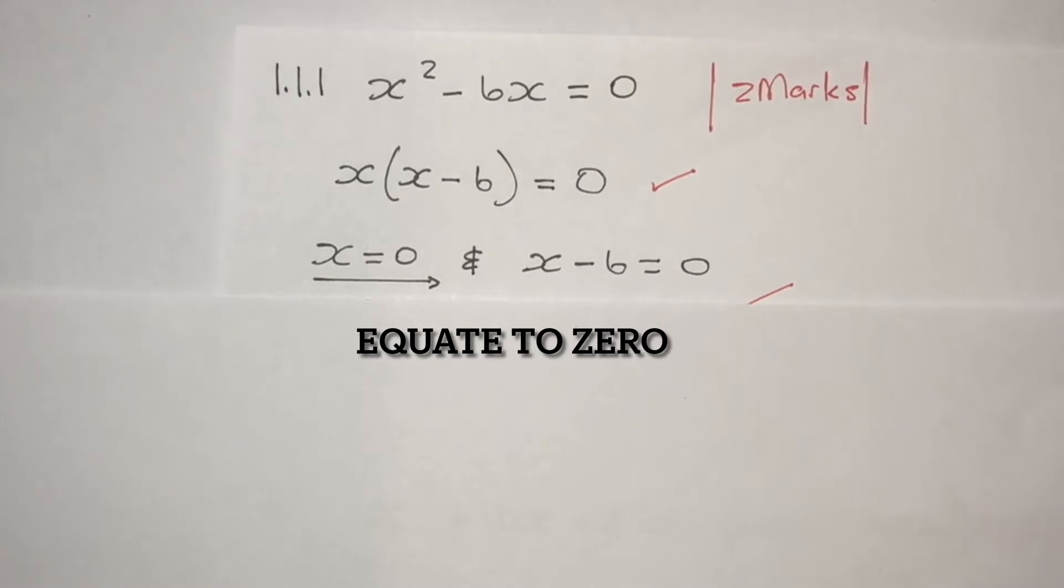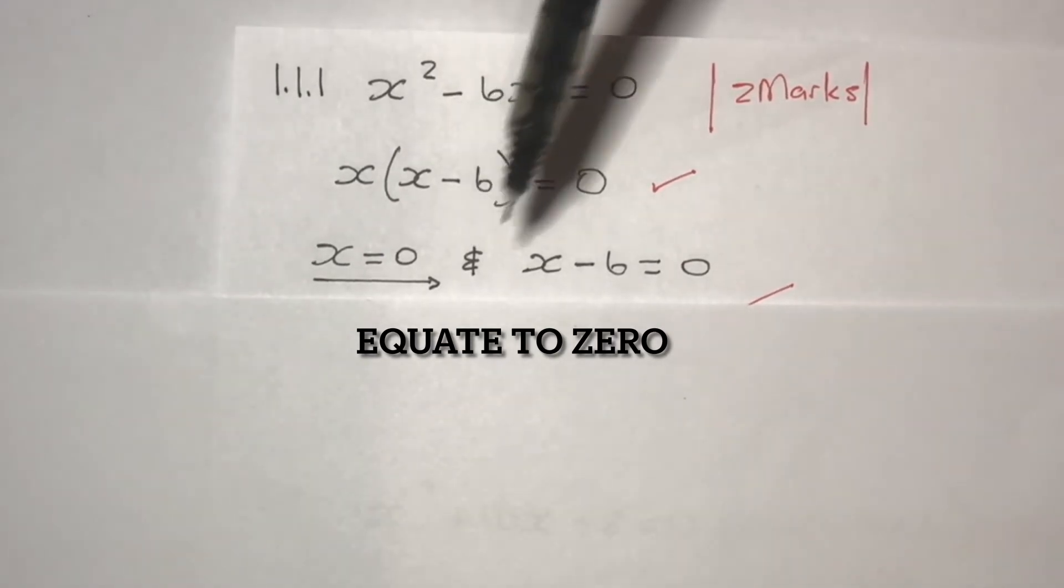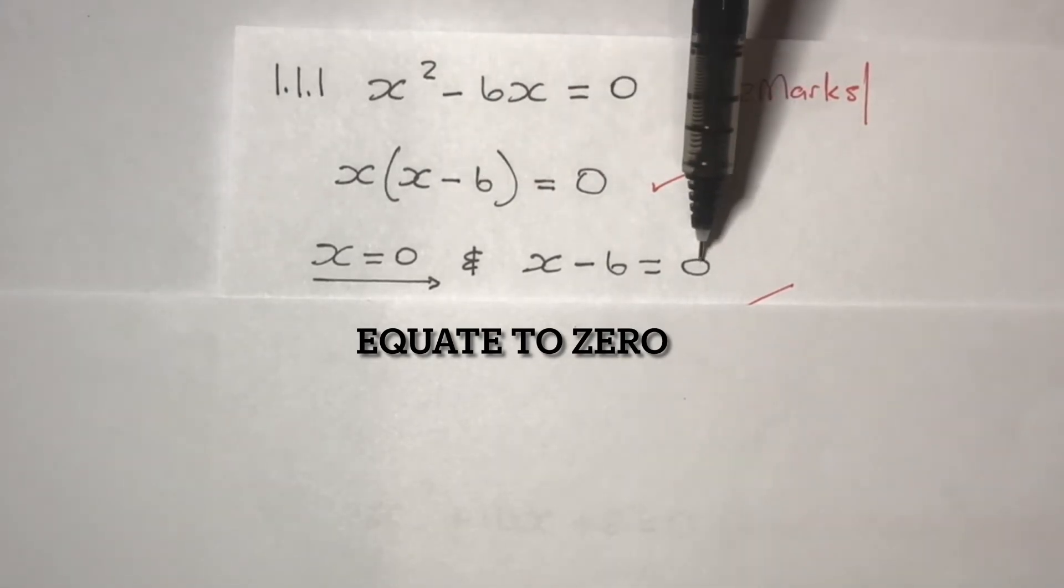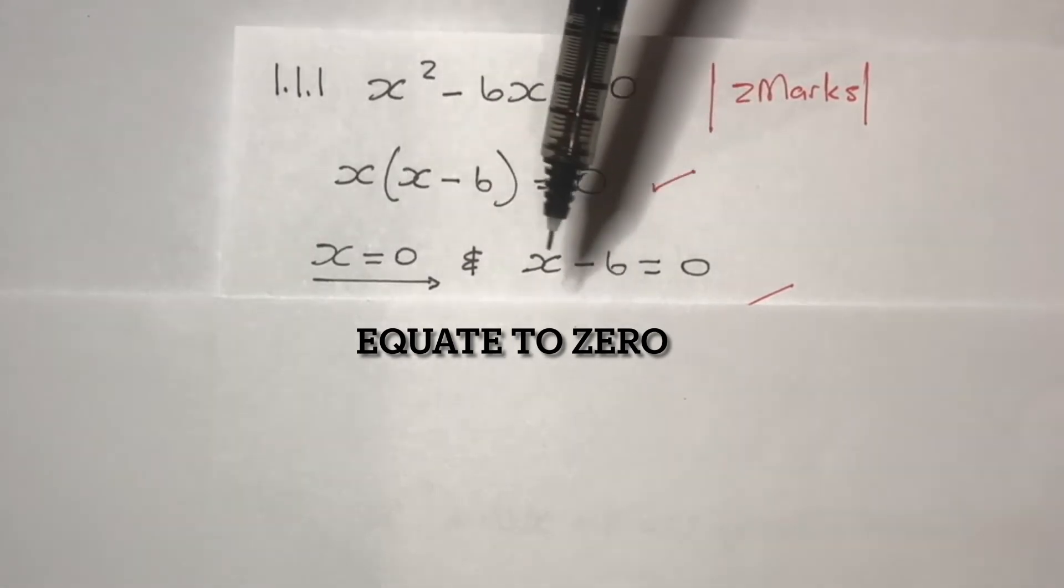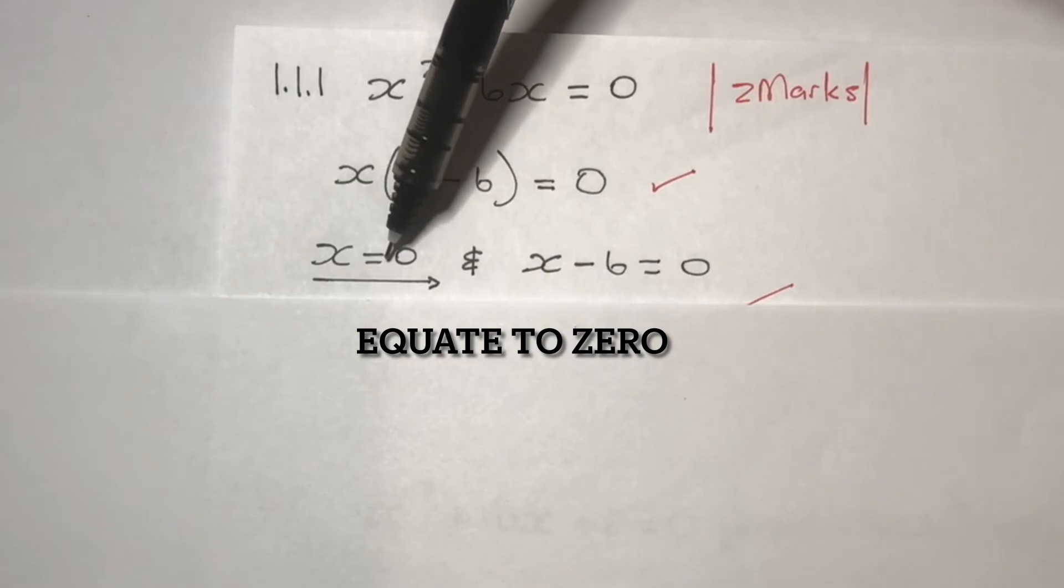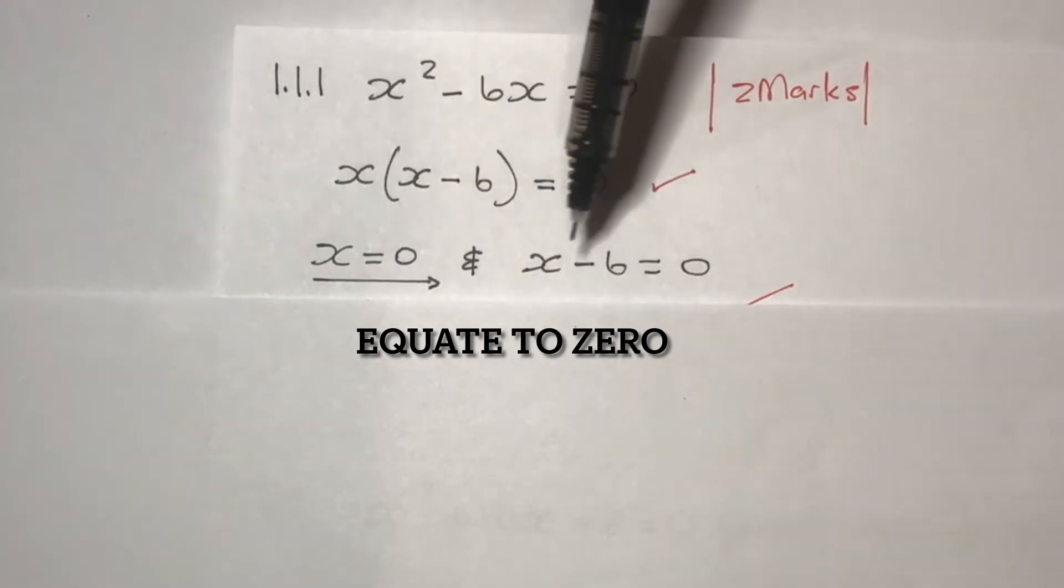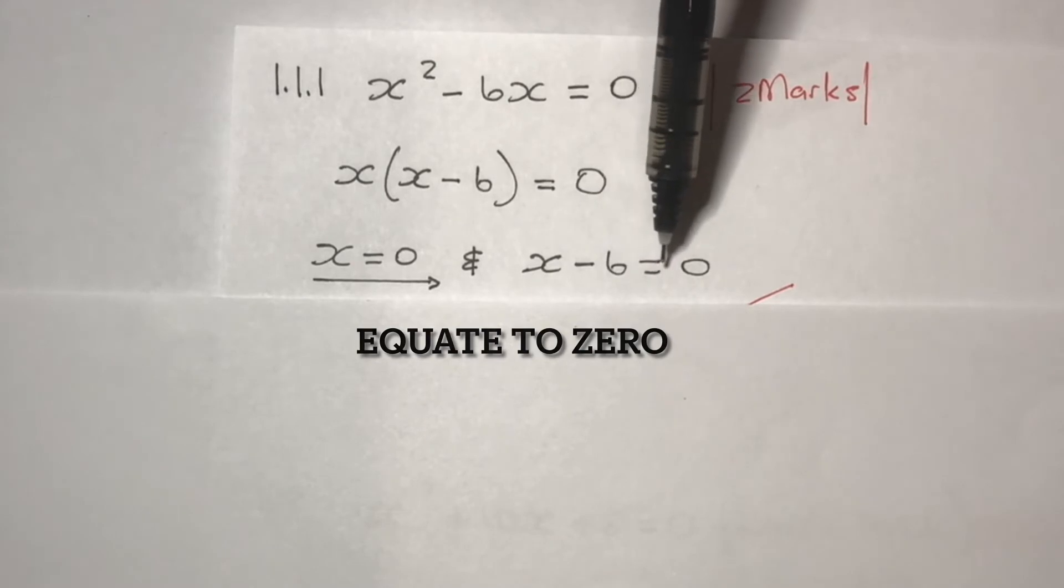Next step, you equate x to 0 and x minus 6 is equals to 0. So in this case, you've already solved the first part of the equation, which is x is equals to 0. And you now need to solve for x minus 6, is equals to 0.